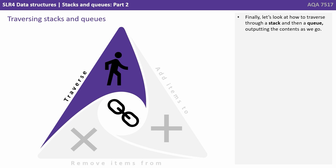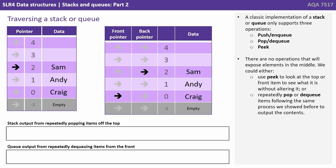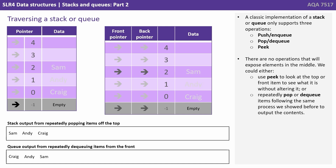Finally, let's look at how to traverse a stack or queue and output its content. A classic implementation of a stack or queue only supports three operations: push/enqueue, pop/dequeue, and peek. There are no operations that expose elements in the middle. We could either use peek to look at the top or front item without altering it, or we could repeatedly pop or dequeue items following the same process shown before to output the contents.